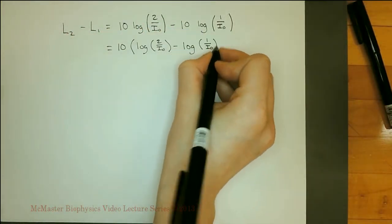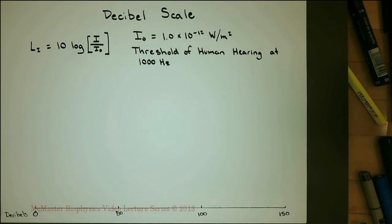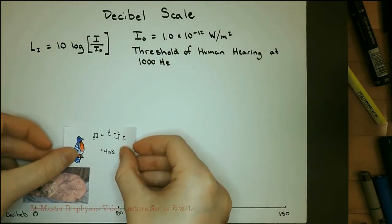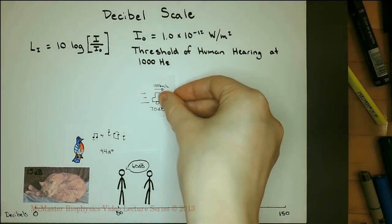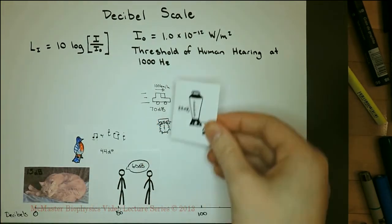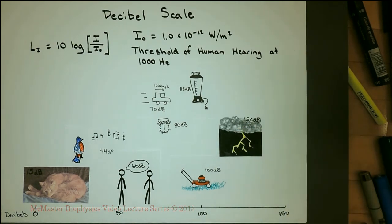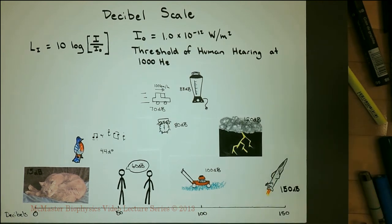Because of the log scale, a sound that is two times more intense will increase by three decibels. A cat purring comes in around 15 decibels. Bird song is about 44 decibels. Casual conversation is around 60 decibels. A car at highway speed from 25 meters away is about 70 decibels. An alarm clock ranks in at 80 decibels. Your average blender blends at 88 decibels. A lawn mower is around 100 decibels. A thunderclap is around 120 decibels. A jet takeoff at 25 meters is about 150 decibels and would cause permanent hearing damage.